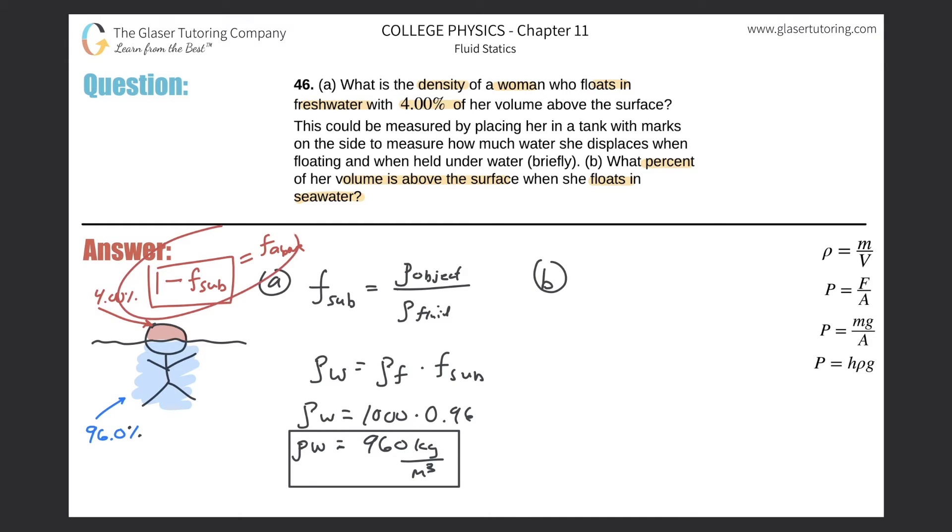So this is really my formula. In other words, the fraction above, the fraction of her body, height, volume, whatever, above the water level will be equal to one minus then the fraction of her body that's submerged.